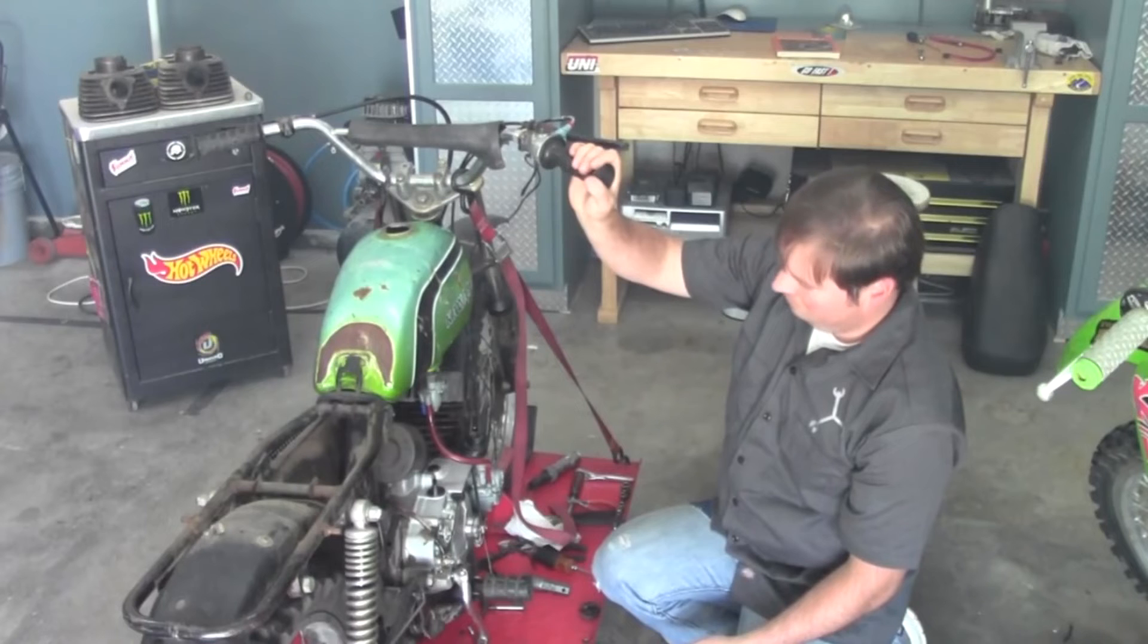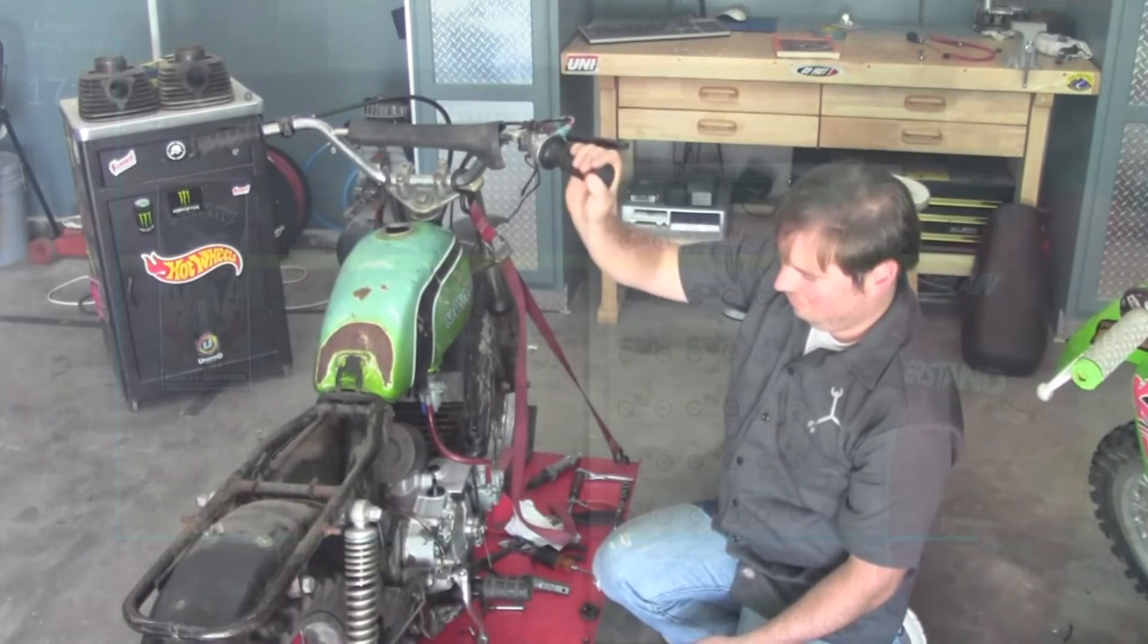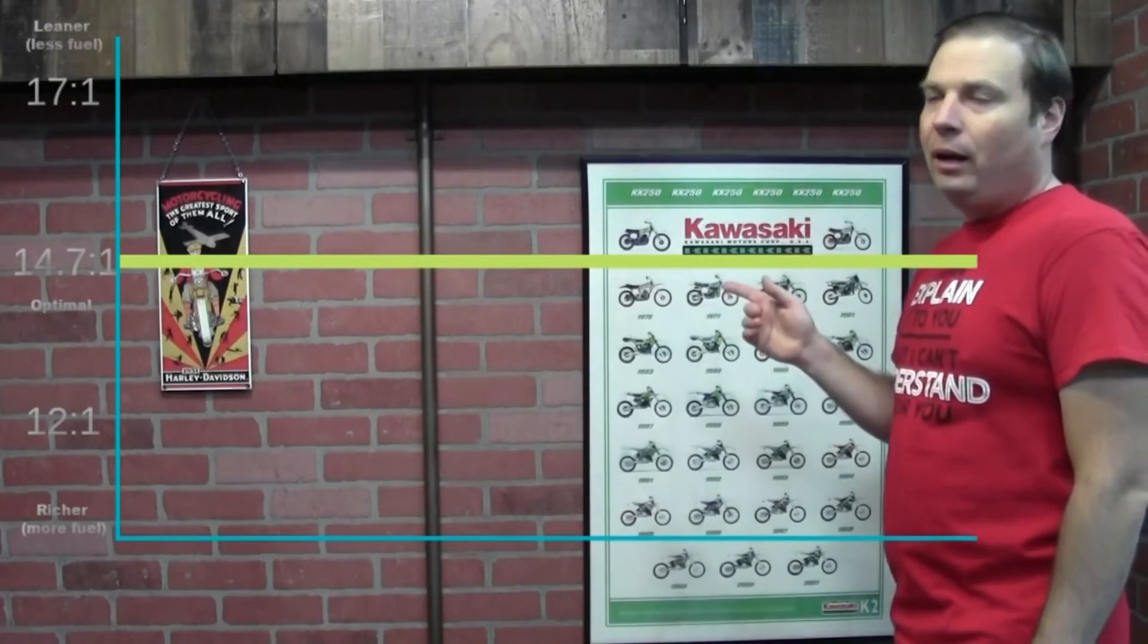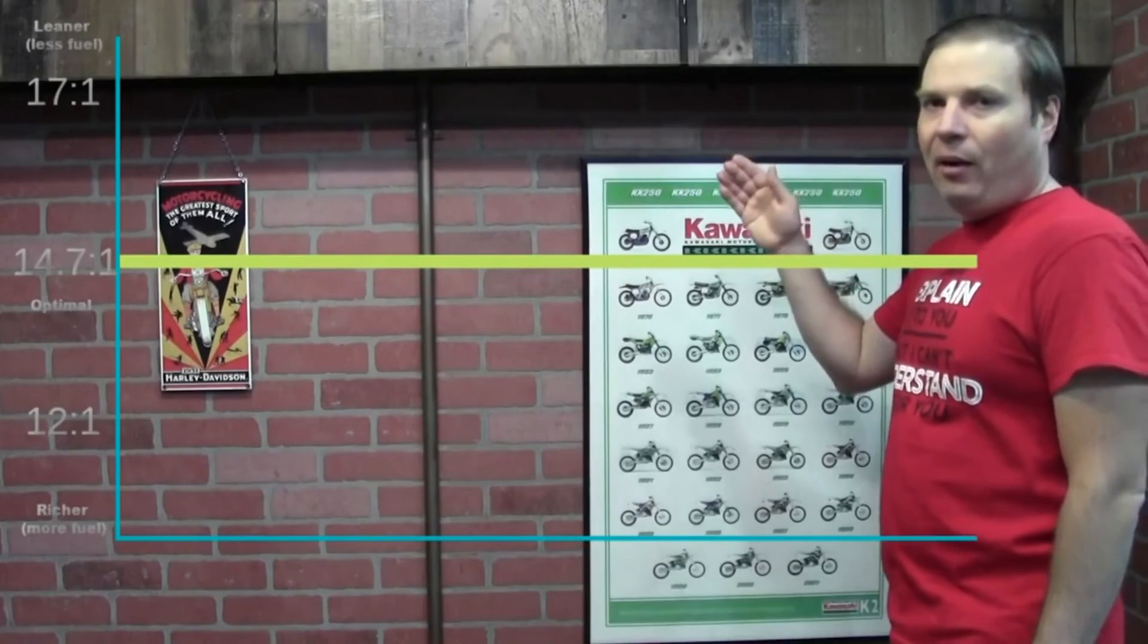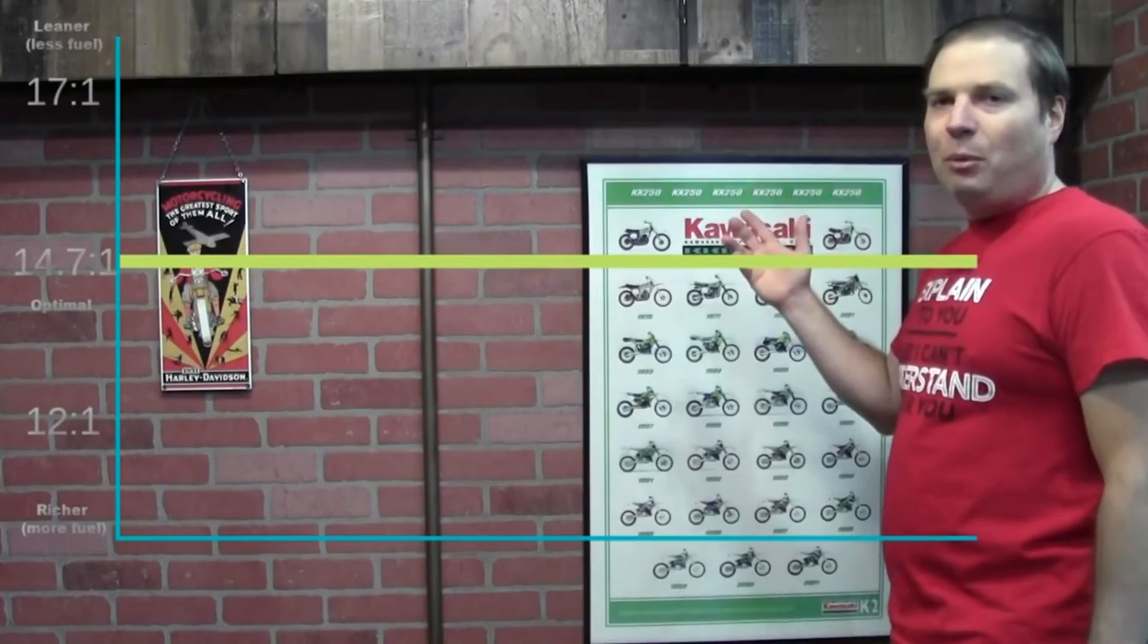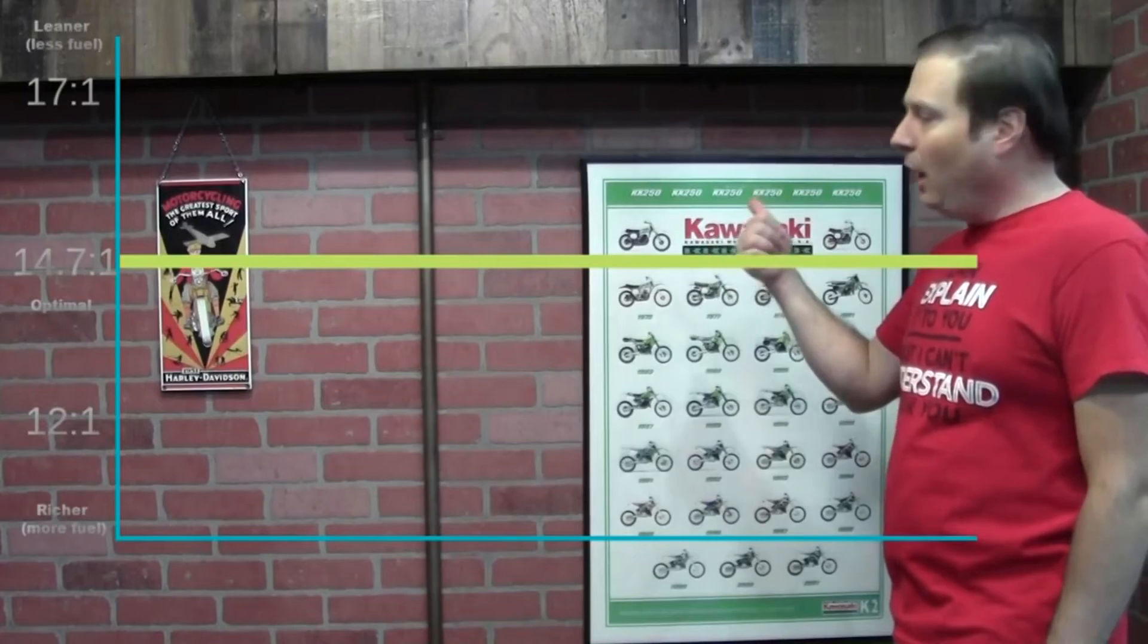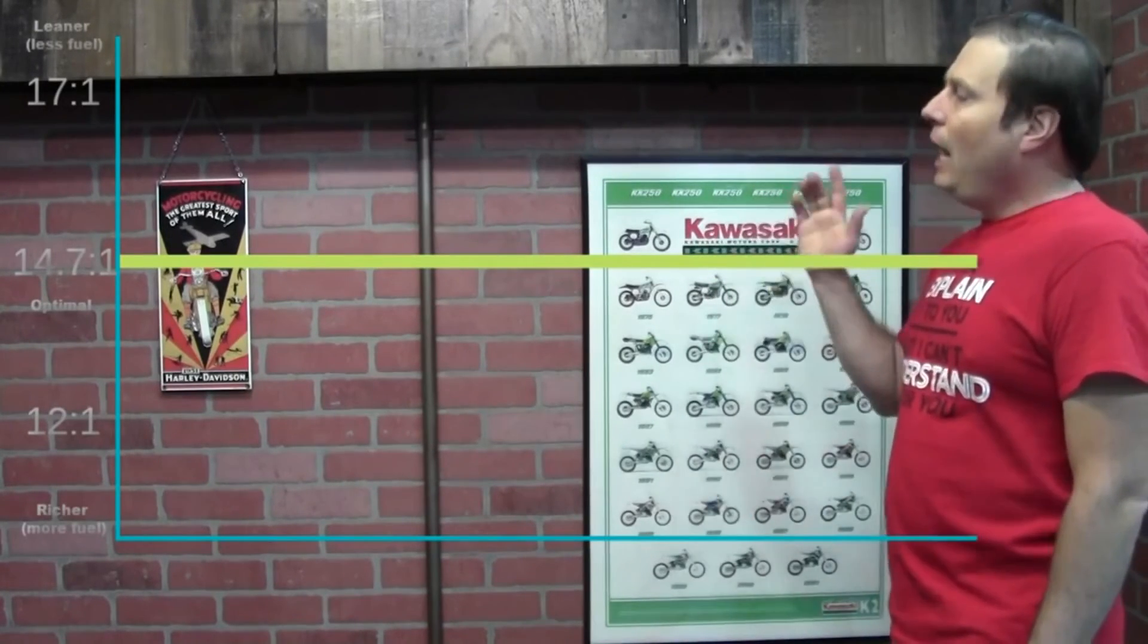Starting with the idle. If the idle is erratic and you have to keep twisting the throttle to keep the bike running, or it runs better with the choke or enrichment circuit engaged, which there will be a video separate all about that, that means that you're too lean for some reason. So, try richening up the mixture. If the idle is loggy or there's black smoke or sooty exhaust at idle, that means you're too rich. So, try and lean out the mixture at idle.